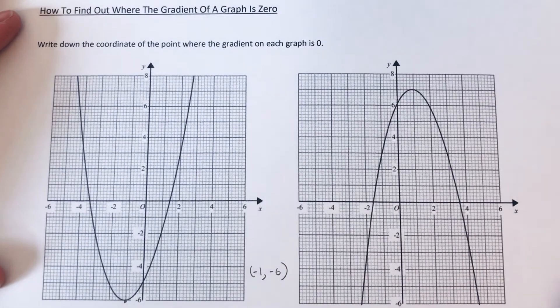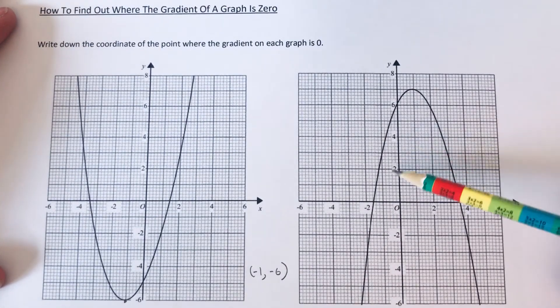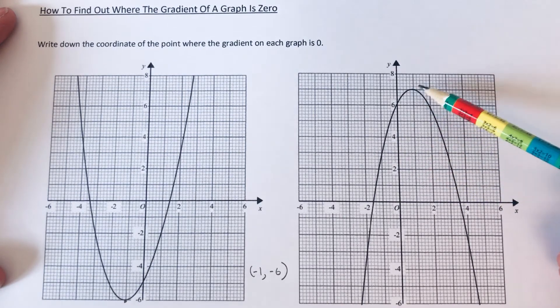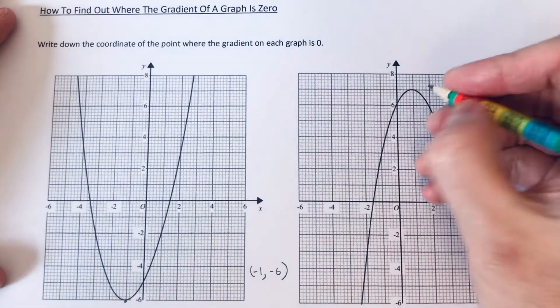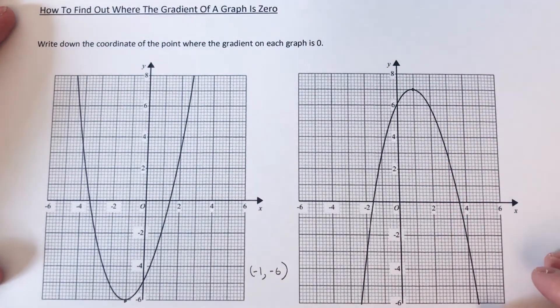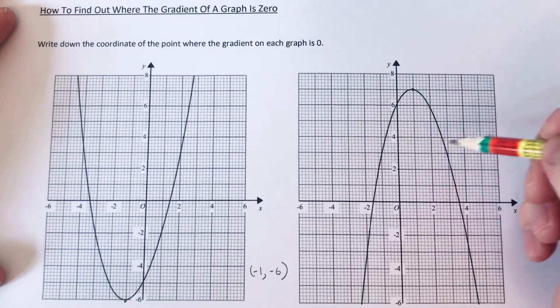So again we just need to find the point on the graph where the curve goes flat. So it's the top point here. Let's just put a little dot there. So again we just need to write our coordinate point down.